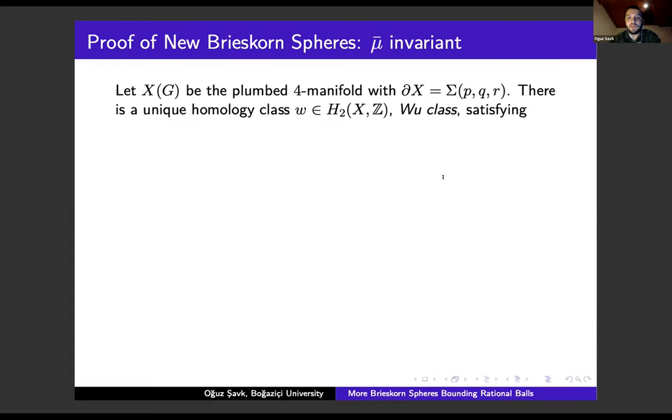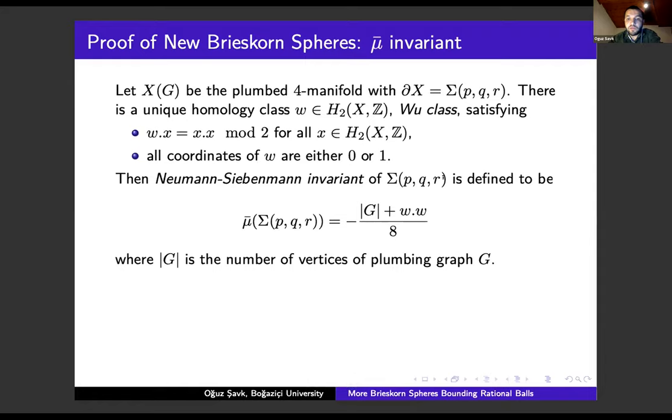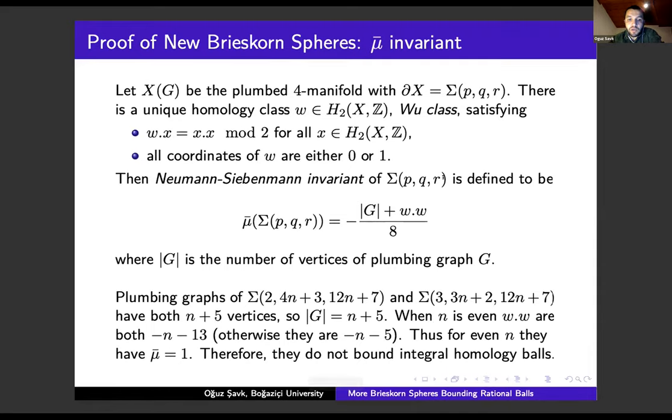For the obstruction, we need to calculate some homology cobordism invariant—the Neumann-Siebenmann invariant. Let X(G) be the plumbed 4-manifold with ∂X = Σ(p,q,r). There is a unique homology class w in H₂(X,Z), the w-class, satisfying w·x ≡ x·x mod 2 for all x in H₂(X,Z), and all coordinates of w are either 0 or 1. Then the Neumann-Siebenmann invariant of Σ(p,q,r) is defined to be μ(Σ(p,q,r)) = -|G| + w·w / 8, where |G| is the number of vertices of plumbing graph G.